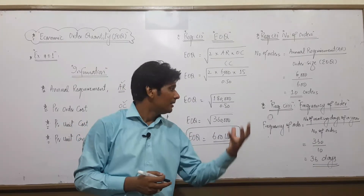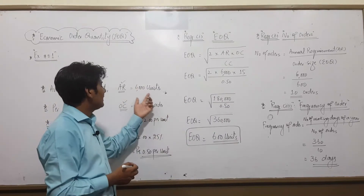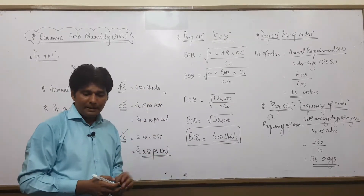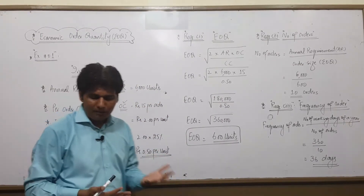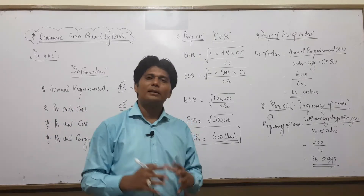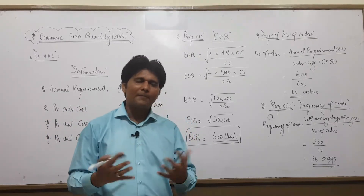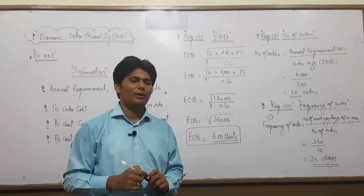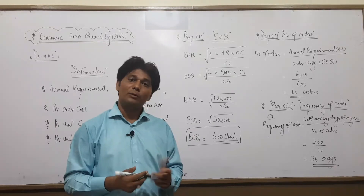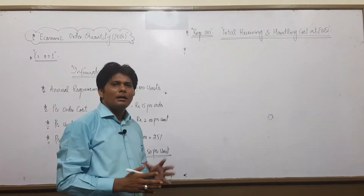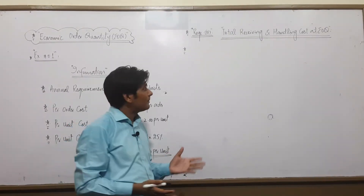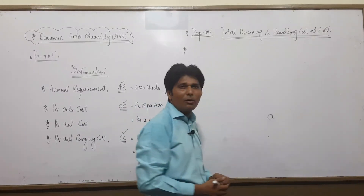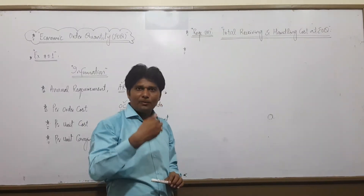So every 36 days we place an order, 10 orders total, 600 units per order — the annual requirement of 6000 units is fulfilled. Now our last and very important requirement: how to calculate total receiving and handling cost at EOQ.